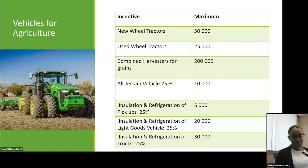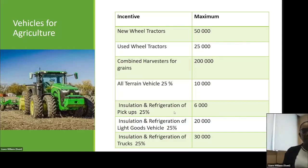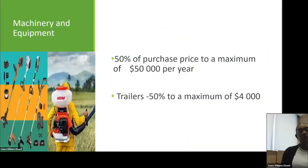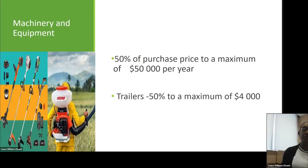Insulation and refrigeration incentives: insulation and refrigeration of pickups — 25% up to a maximum of $6,000; insulation and refrigeration of light goods vehicles — 25% up to a maximum of $20,000; insulation and refrigeration of trucks — 25% up to a maximum of $30,000. Machinery and equipment is 50% of the purchase price up to a maximum of $50,000 per year. Trailers also fall under machinery and equipment at 50% up to a maximum of $4,000.